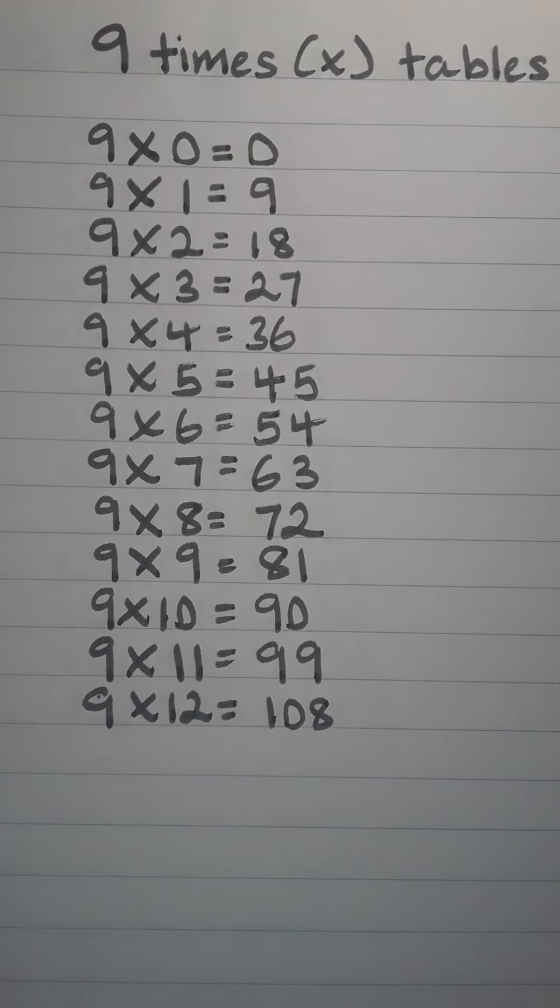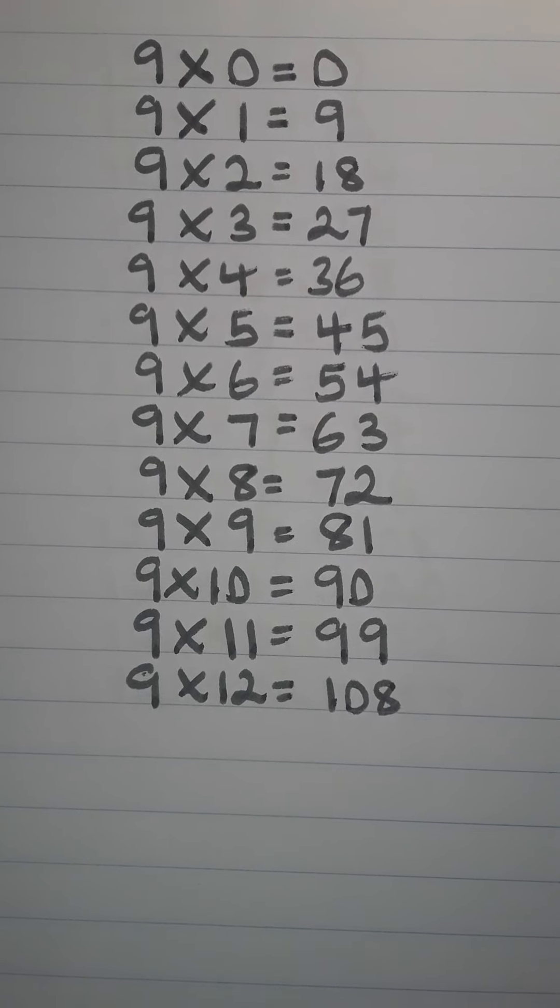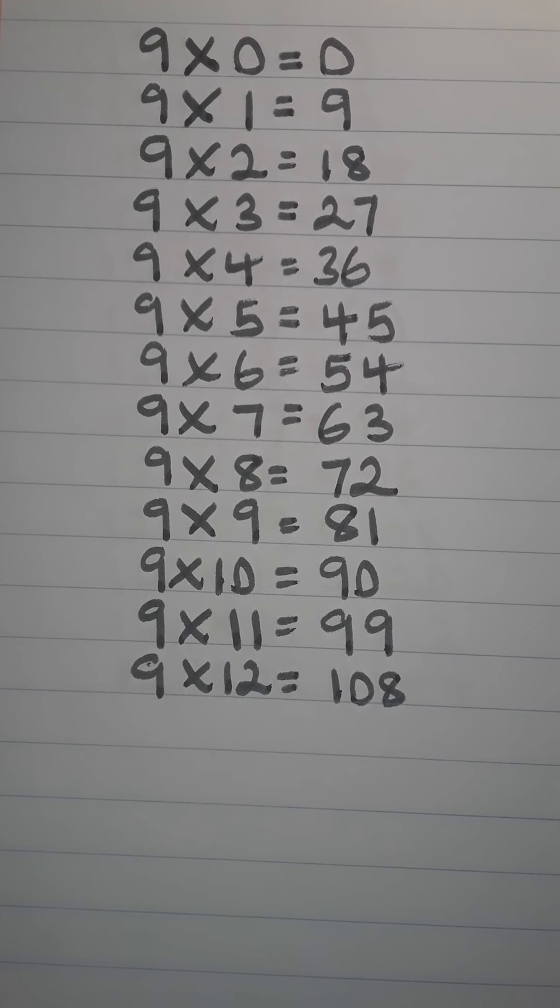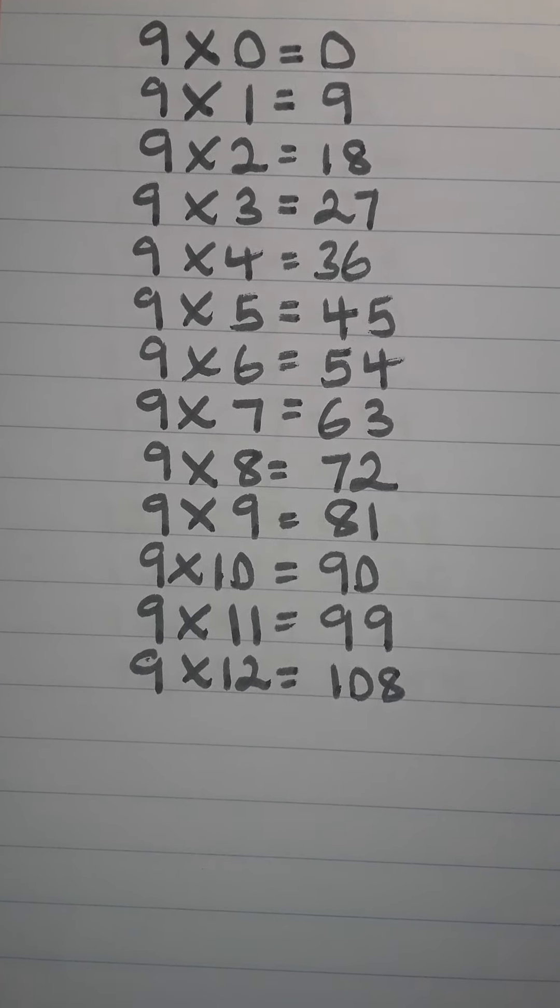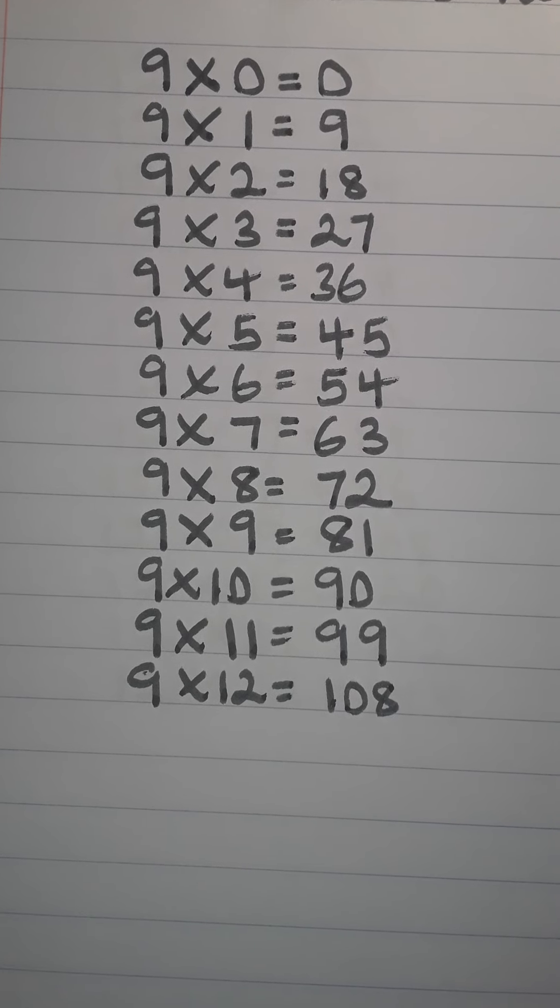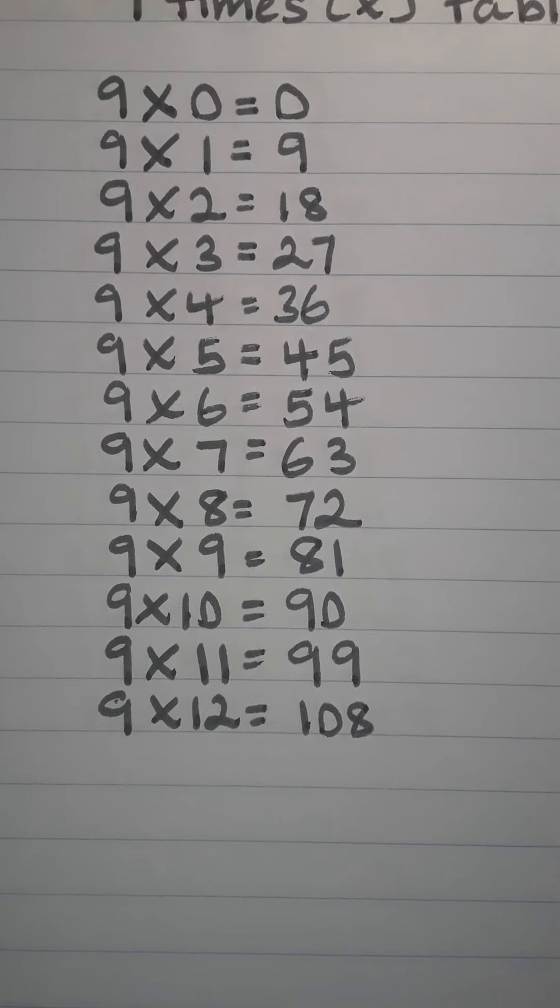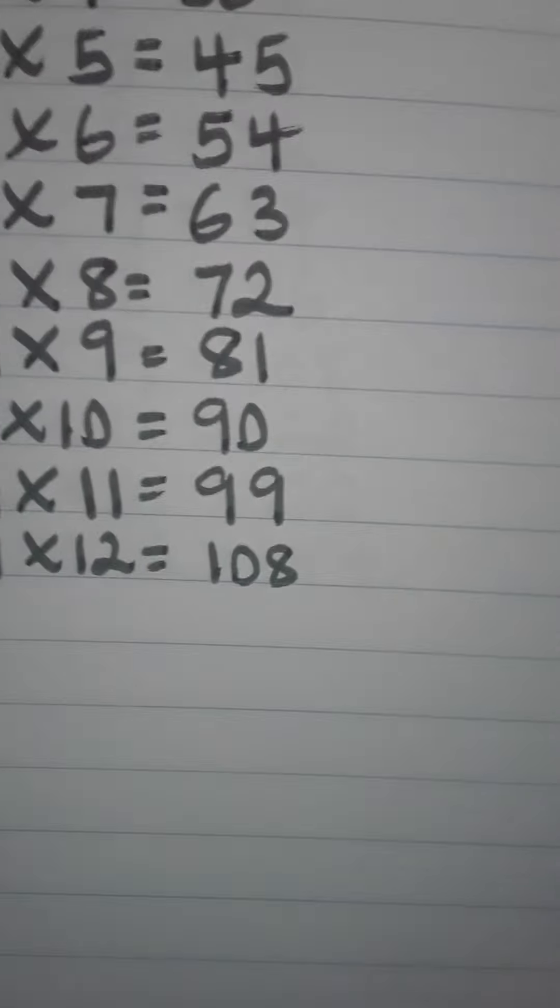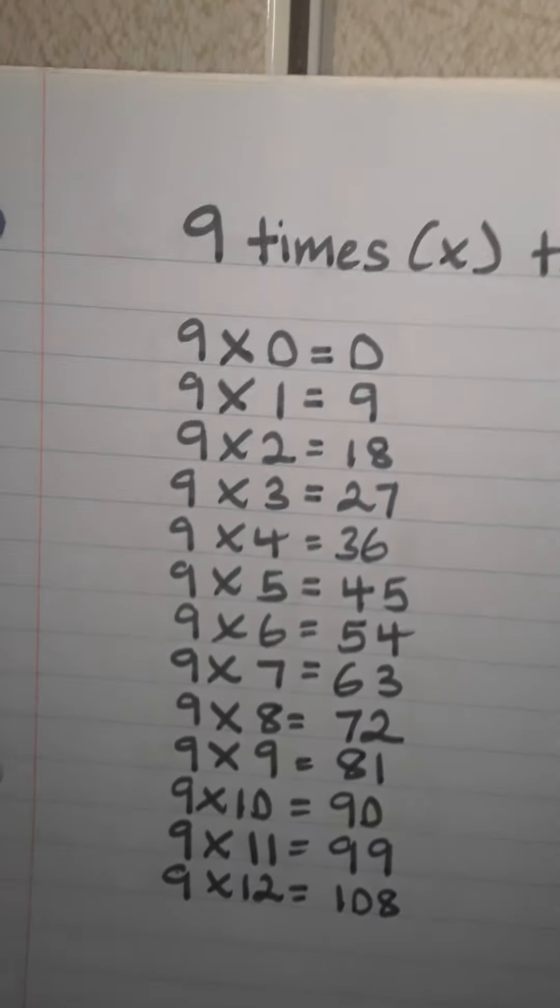We're going to go over 9 times tables once again. 9 times 0 is 0. 9 times 1 is 9. 9 times 2 is 18. 9 times 3 is 27. 9 times 4 is 36.